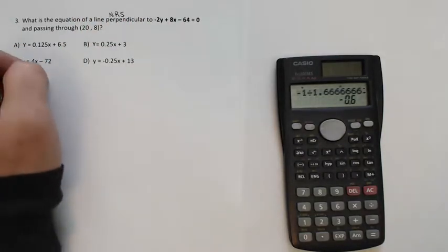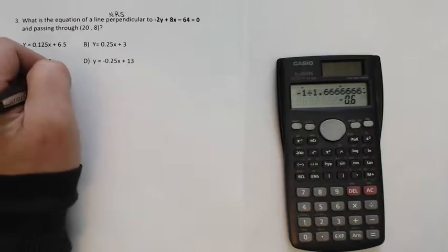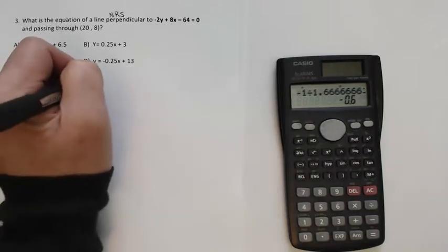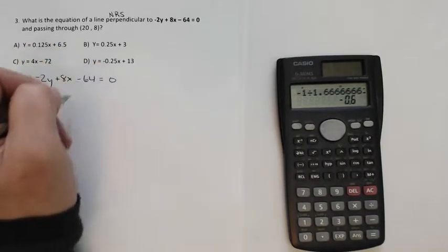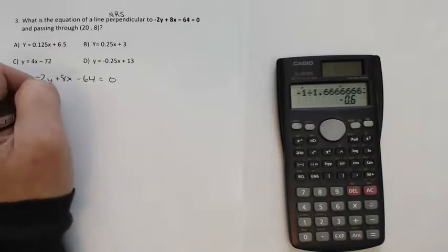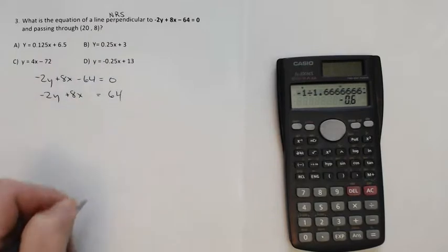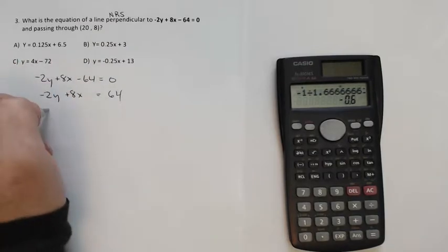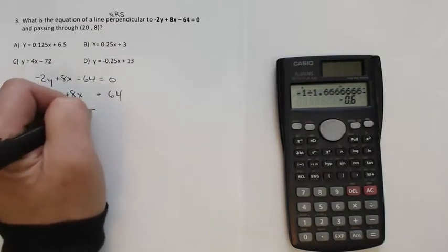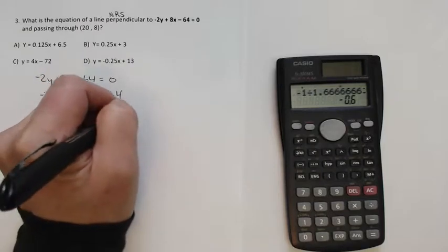Negative 2y plus 8x minus 64 is 0. Adding 64 to both sides leaves me with negative 2y plus 8x is equal to positive 64. Subtracting that 8x from both sides is leaving me with that.